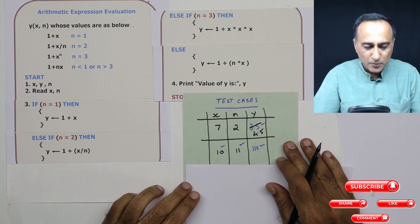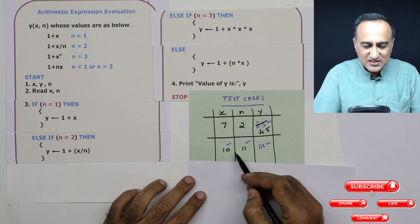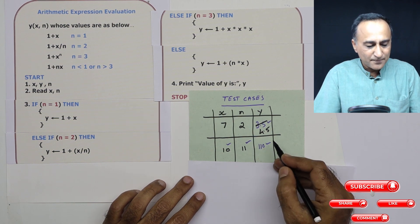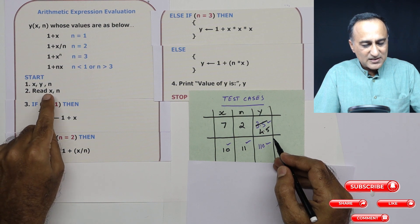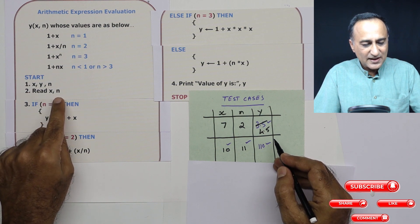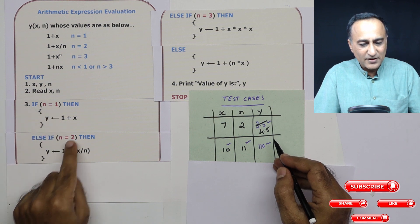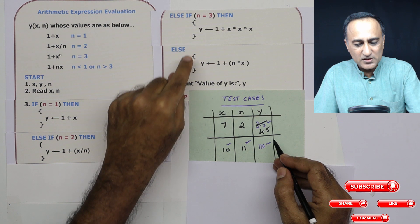Now let's take an example of one more. Here x is 10, n is 11, we need to calculate the value of y. So x is 10, n is 11. This is false. This is also false because n is 11. 11 equal to 3 is false, else.